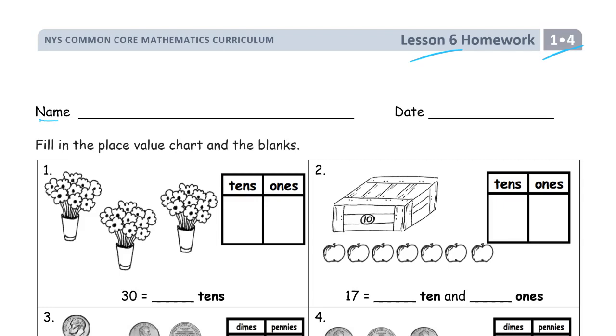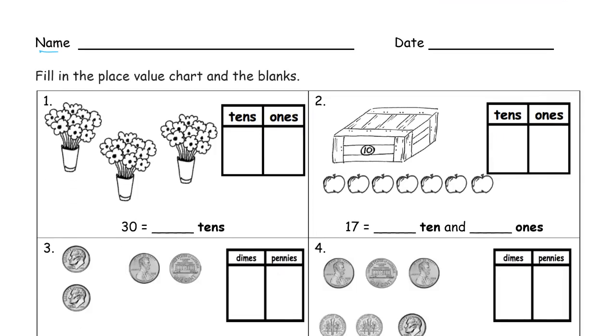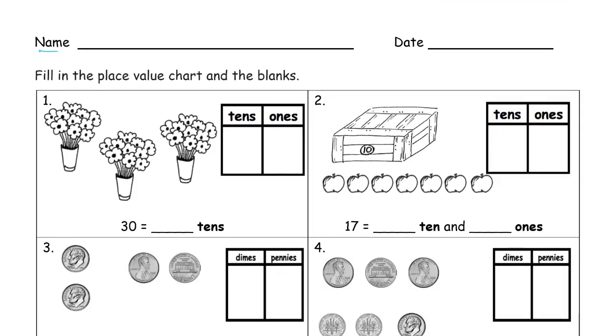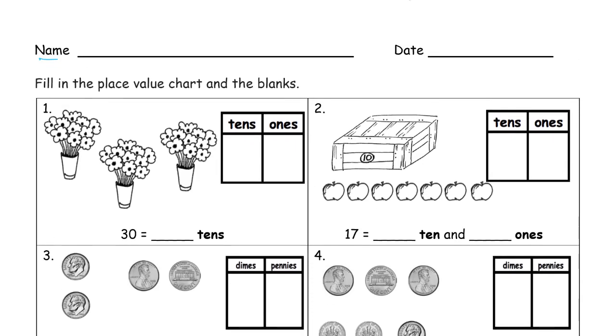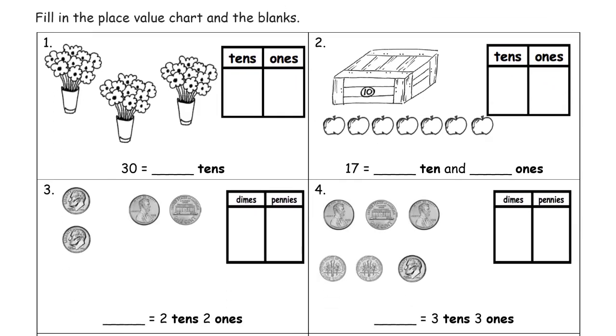And we're back to counting groups of tens in pictures and place value boxes and thinking about unit form and ones and tens. And now we've got some coins. We're looking at pennies and dimes. Pennies are ones and dimes are tens. And I'll just get into a brief reminder about coin ID that can help.